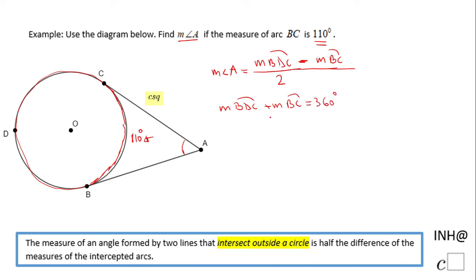Arc BC is 110, so we can find the measure of arc BDC by subtracting 110 from both sides.